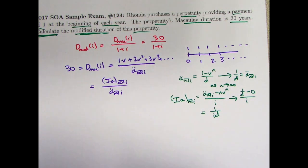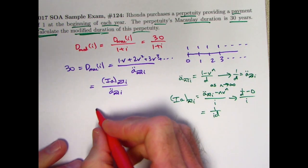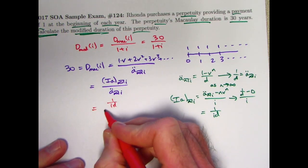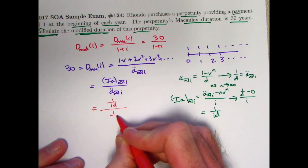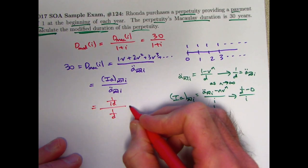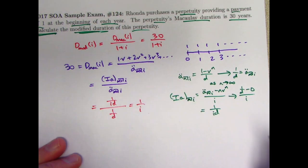Now we can just plug these things in, and fortunately the D's cancel. This becomes 1 over i times D divided by 1 over D. The D's cancel. This simplifies right away to 1 over i.